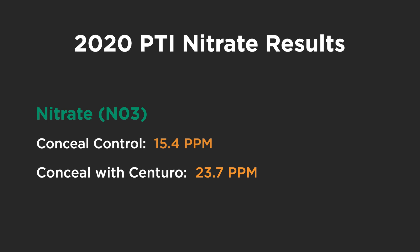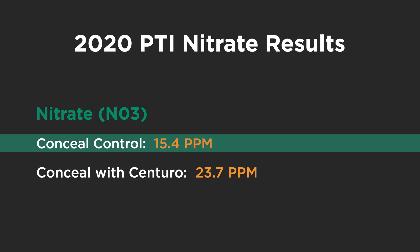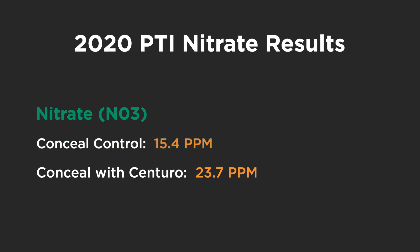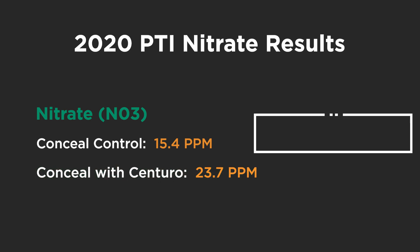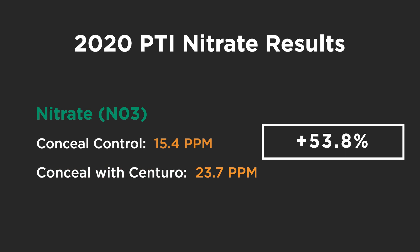We've been pulling soil nitrate samples throughout the growing season, looking at UAN 32% applied through Conceal with and without Centuro. Without it — our control — we're finding 15.4 parts per million of nitrate as of last week. That's a pretty low result; we like this to be 25 or better to show we've got enough to finish. When we add Centuro to the Conceal, we bump results up near 24 ppm — just about where we need to be. That's a 53.8% improvement in nitrates from using Centuro.